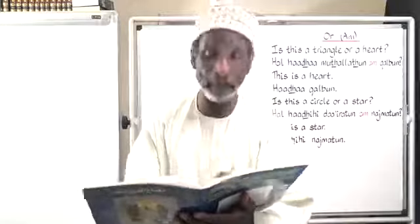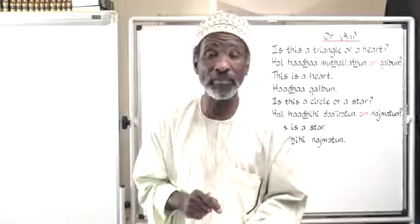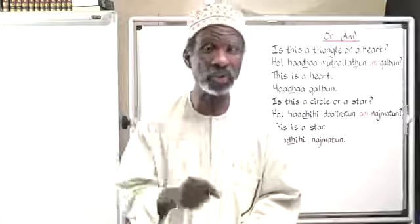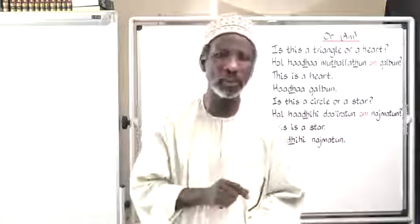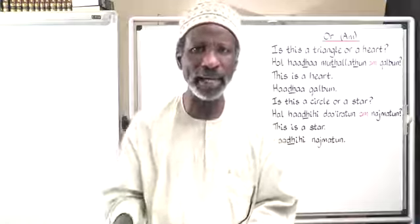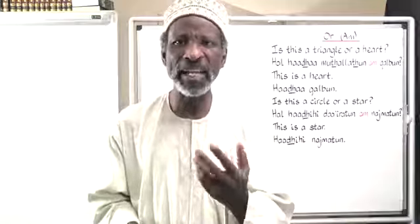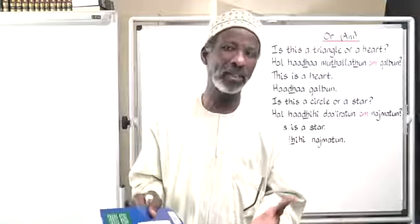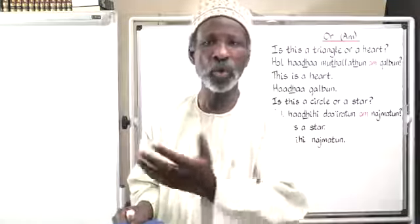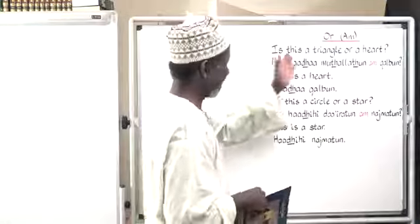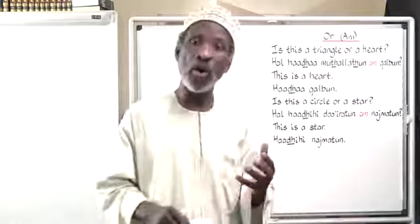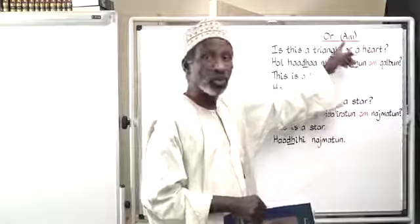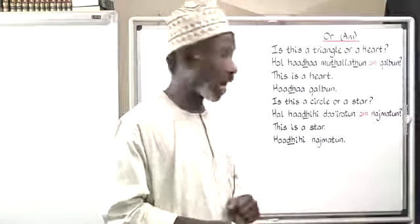Today's lesson is based on page 13 and it's about what is known as disjunctive conjunctions. Never mind about the jargon. It just means 'or' — the particle used before the second of two alternative questions. This is your disjunctive conjunction, meaning 'أَمْ' in Arabic.